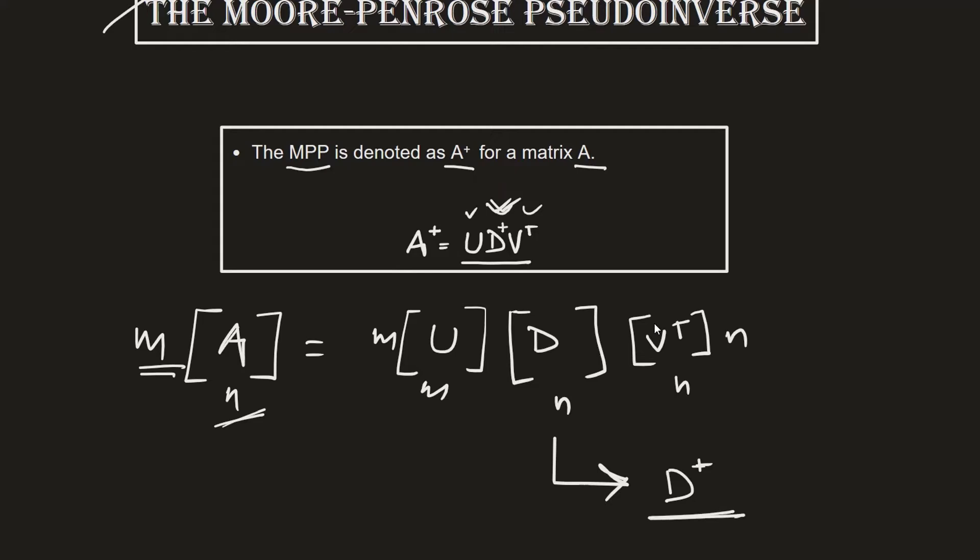After decomposing the matrix A into these three elements, once we are able to acquire the Moore-Penrose pseudoinverse, this will be as efficient as the inverse of a matrix in order to solve for unknown in a given linear equation. That's pretty much it for the theory part. Now let's quickly jump on to the Jupyter notebook to have some coding demonstration.